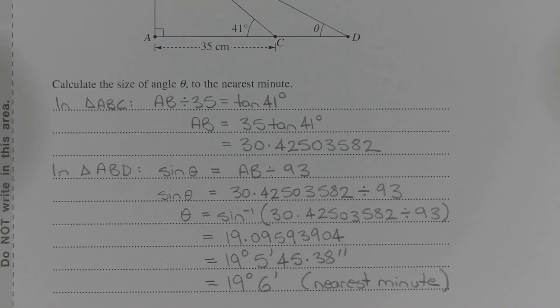Converting that to degrees, minutes and seconds, that equals 19 degrees, 5 minutes and 45.38 seconds, which rounds to 19 degrees and 6 minutes, correct to the nearest minute.